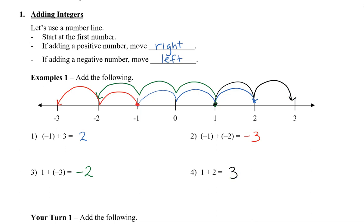Now let's take a look at this in another way. When we look at the question, we can see that we have negative one plus three, and we can think of two as saying three minus one, which is the numbers three and negative one. For negative one and negative two, when we add those together, we can also think of this as one plus two, and that gives us three. But because both of those numbers are negative, negative plus more negative will still give us a negative number.